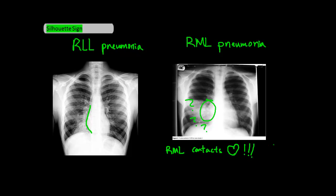In the film with the right lower lobe pneumonia, the right middle lobe is not affected and still consists of air inside. And because the density of the air is different from the density of the right heart which it borders, we can still see this border clearly, even though there's a right lower lobe pneumonia present.